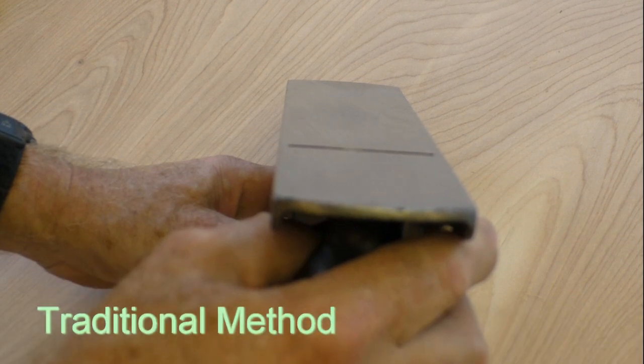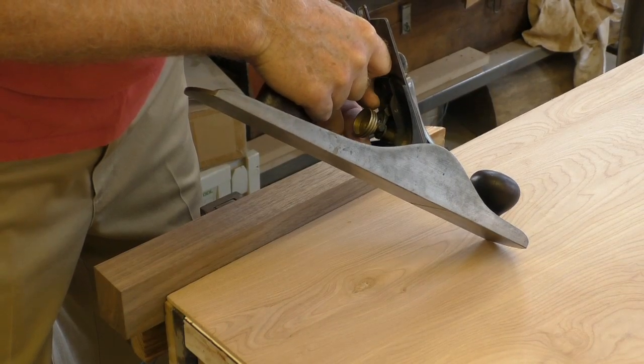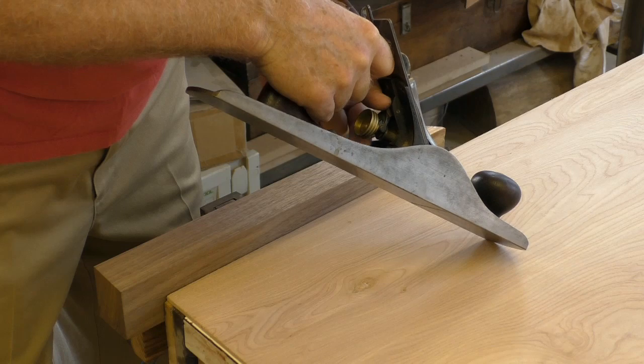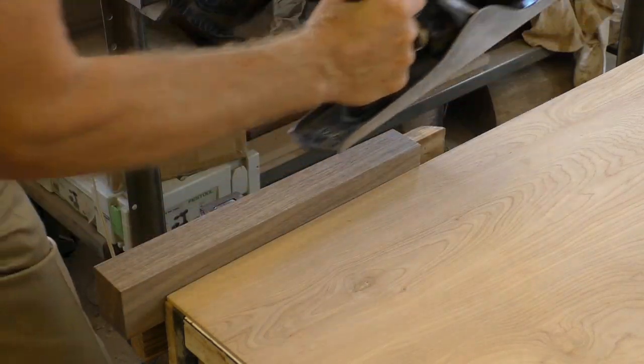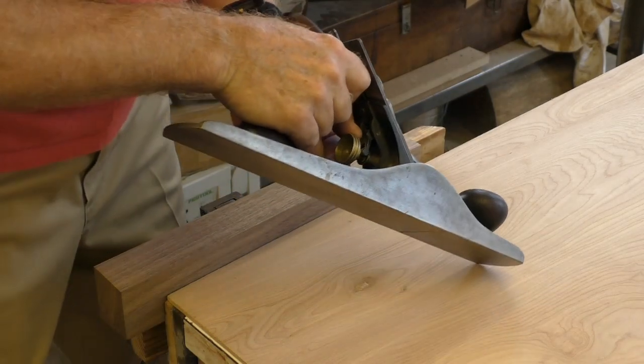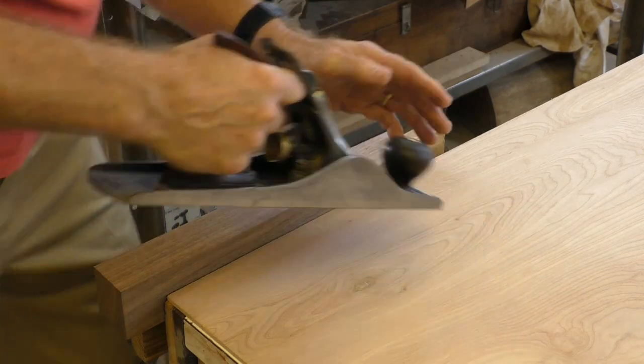Traditional methods for setting your plane iron require a series of tedious trial and error adjustments and test cuts. Sight down the plane's sole, adjust the depth, take a cut, adjust again, make another test cut, and yet another adjustment. And finally, you get to repeat the whole process until you're happy with the plane iron's lateral adjustment.